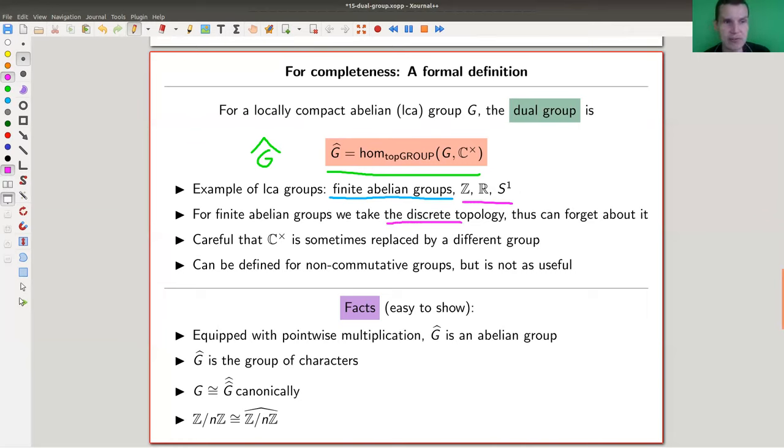Anyway, for finite abelian groups, we take the discrete topology anyway, so there is no topology. In other words, it's just the set of group of homomorphisms from G to C star. And just one light catch here depends a bit where you look at the literature. Actually, C star might be replaced by something different. In most circumstances, it doesn't really matter. But in general, it will be slightly different.